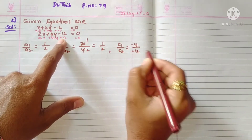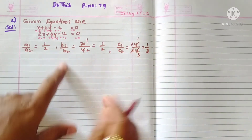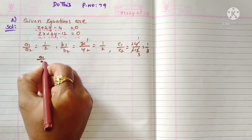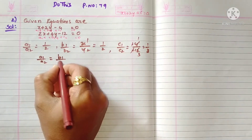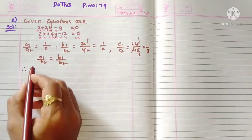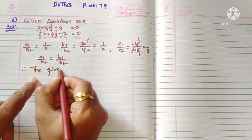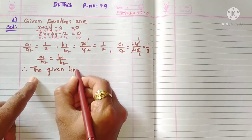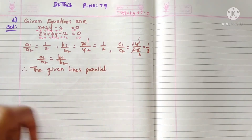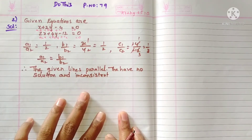Next, c1 by c2: c1 is minus four, c2 is minus two, so minus and minus cancel giving four by two which is one by three. Clearly here a1 by a2 equals b1 by b2. When the ratios are like this, the two given lines are parallel. Parallel means they have no solution and are inconsistent.